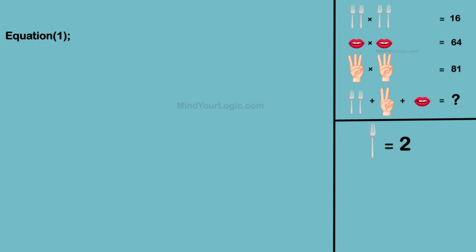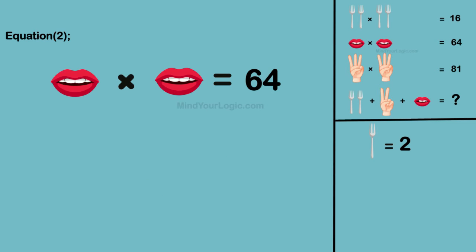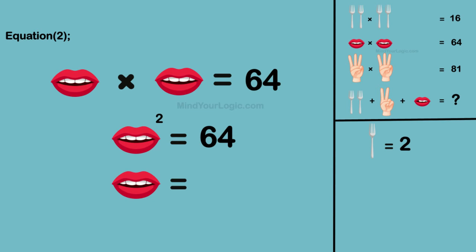Similarly, solving equation 2: mouth multiplied by mouth equals 64. Therefore, the value of a mouth with 4 teeth equals 8.